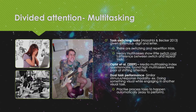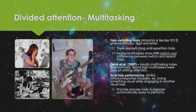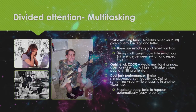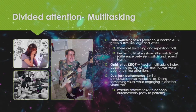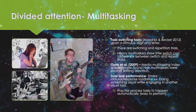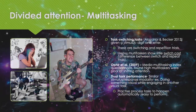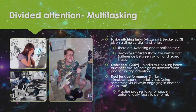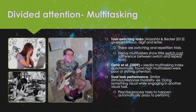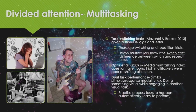Divided attention, or multitasking: in task switching tasks, Alzahabi and Becker (2013) gave participants a stimulus of a digit and a letter, and they were required to switch and undergo repetition trials. It was found that heavy multitaskers had little switch costs, which was the difference between switch and repeated trials. Ofer et al. (2009), using the media multitasking index questionnaire, found that high multitaskers were poor at shifting attention.